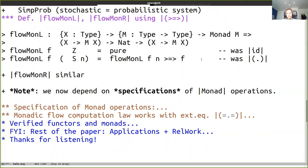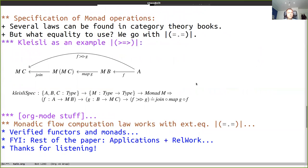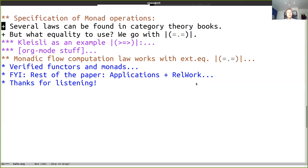FlowMonR is similar - just these two terms are swapped. Note this is using a type class, and we would like a generic proof that flowMonL equals flowMonR without knowing which monad M we have. That requires the monad class to have some laws in it - otherwise we know nothing about them. So we need some kind of specification of monad operations. Lots of laws about monads can be found in category theory books, but it's not obvious what equality they should use.